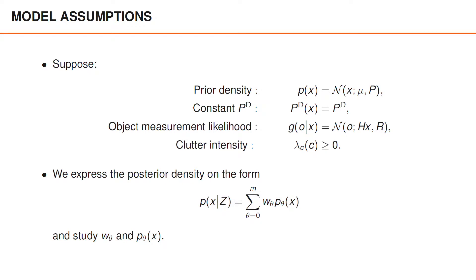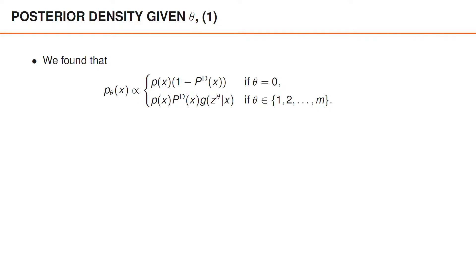As usual, we decompose the posterior into one term for each data-association hypothesis, and we will now study the detailed expressions for Wθ and Pθ. Let us start by considering Pθ, which is the posterior of x given the data-association theta and the measurements z. We can actually compute Pθ using the update step presented in the video about single object tracking with known associations, but it's easy to derive and I'll repeat it here for completeness.